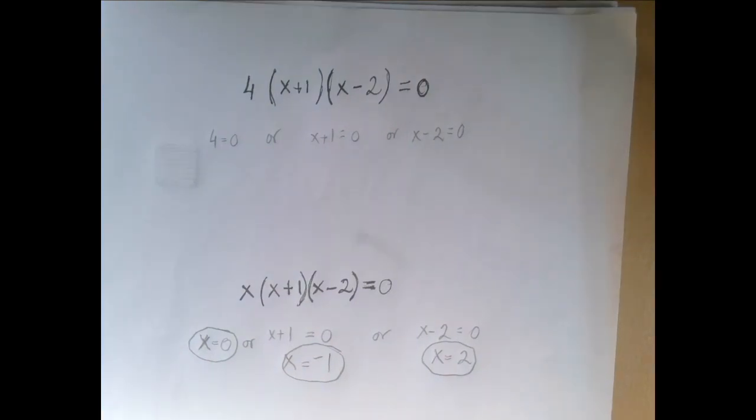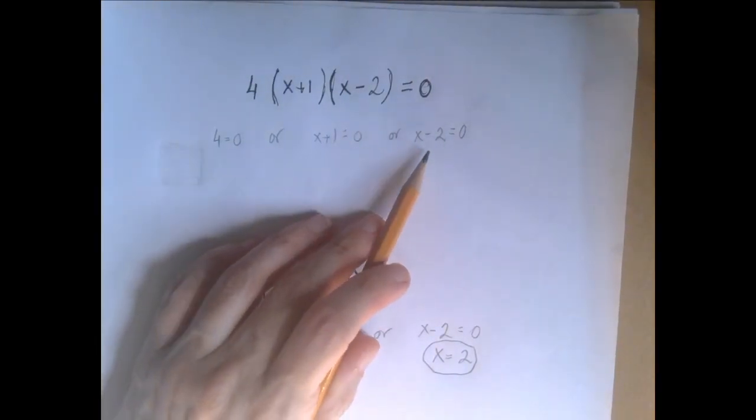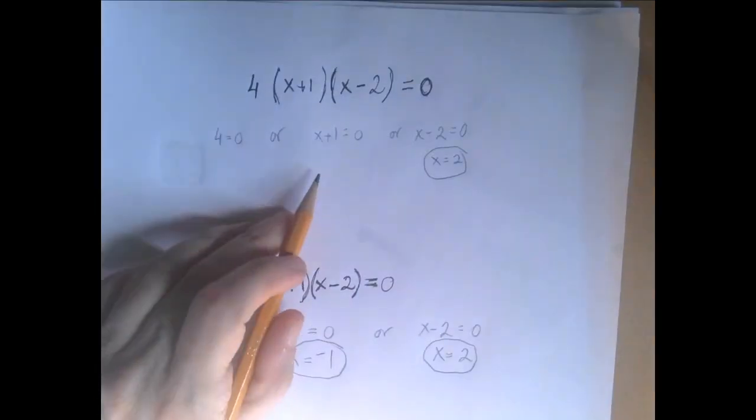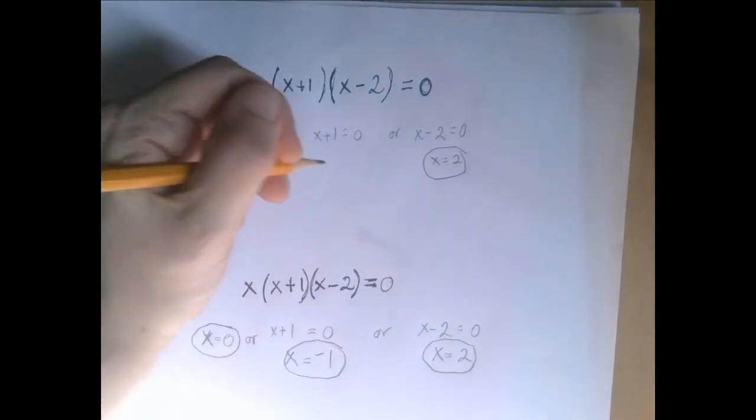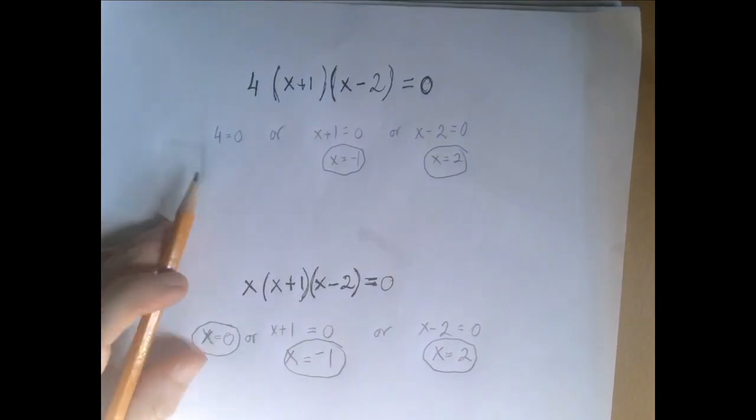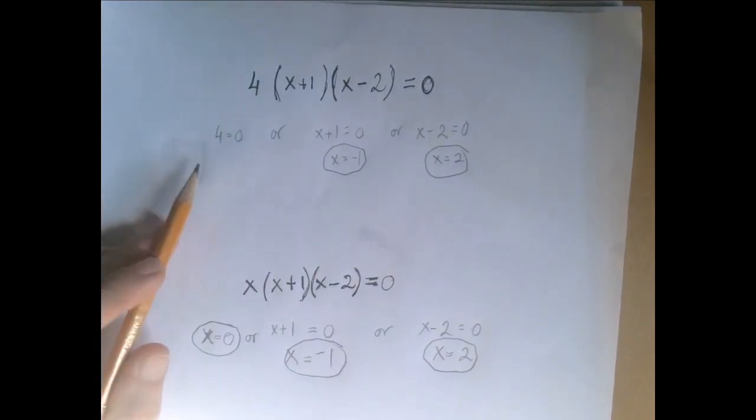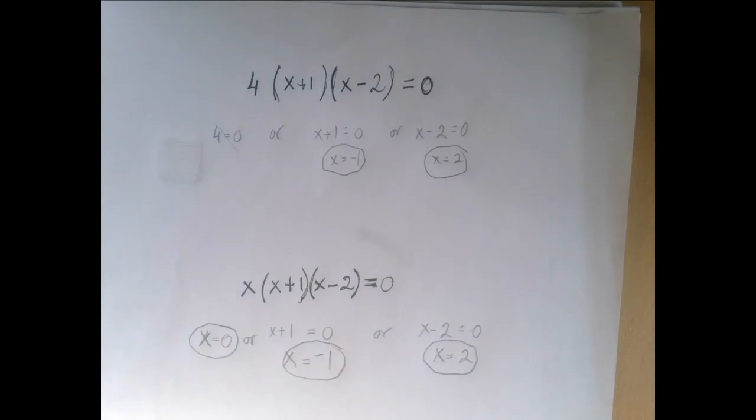What x can make this true? x minus 2 equals zero can happen when x is 2. x plus 1 equals zero can happen when x is negative 1. But no x can make 4 equal zero. This is never going to happen, so there is no solution coming from the third factor.